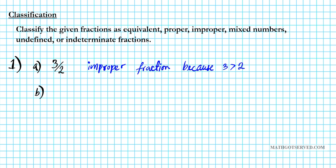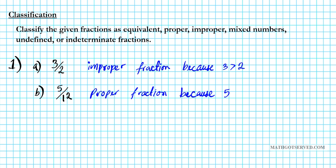B: what if we have the fraction 5 over 12? What kind of fraction is this? This is a proper fraction. Why is this a proper fraction? It's because the numerator 5 is less than the denominator 12.